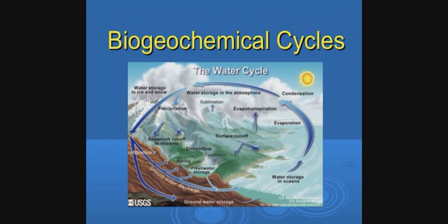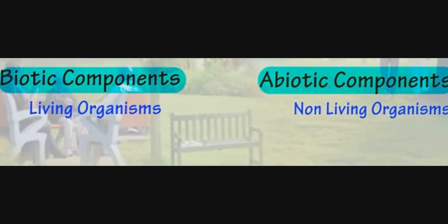Biogeochemical cycle. 'Bio' means life, 'geo' means earth. The biosphere is a part of the earth. There are four spheres: lithosphere, hydrosphere, atmosphere, and biosphere. All resources of the biosphere can be grouped into two major categories: biotic components and abiotic components. Biotic means living factors, and abiotic means non-living factors.